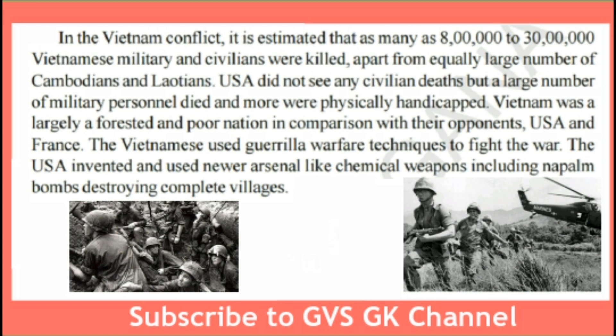Vietnam was a largely forested and poor nation in comparison with its opponents, the USA and France. The Vietnamese used guerrilla warfare techniques to fight the war. The USA invented and used a powerful arsenal including chemical weapons such as napalm bombs, destroying complete villages. America fought against Vietnam and most civilians lost their lives, with all chemical weapons including napalm bombs used to destroy complete villages.